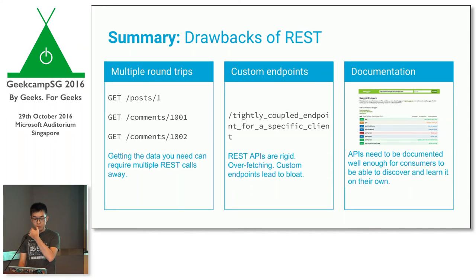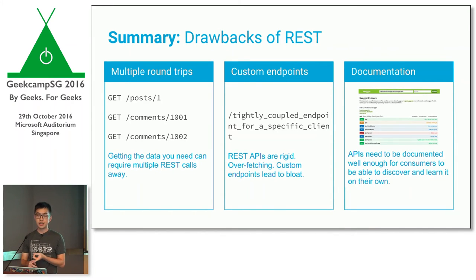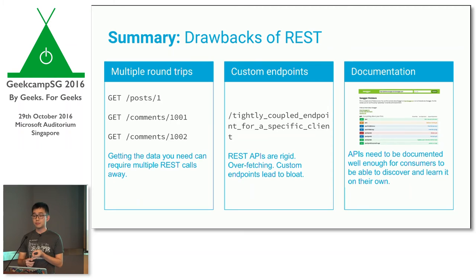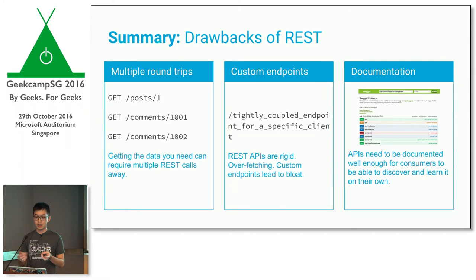To summarize, these are the drawbacks of REST that GraphQL tries to solve. First, multiple round trips — you need multiple REST calls to get the data you need. Second, custom endpoints, because APIs are rigid by default and you can't change the response without changing the backend code. And finally, documentation is a challenge.